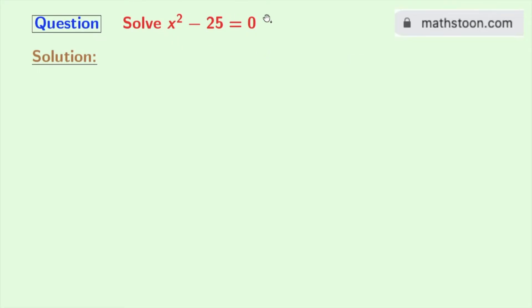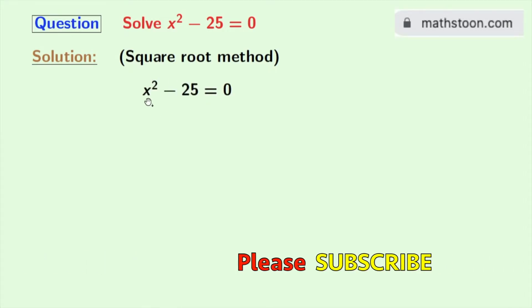We will solve this equation using two methods. Firstly, we will use square root method. Now our given equation is x square minus 25 is equal to 0.